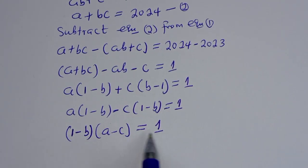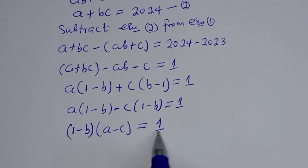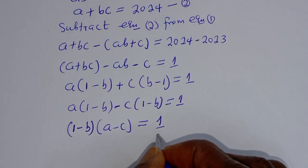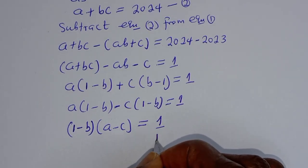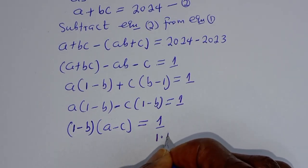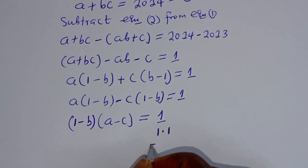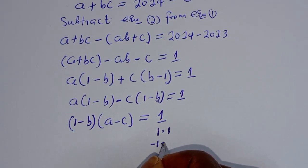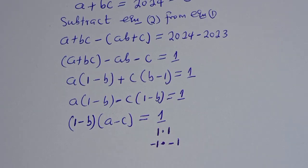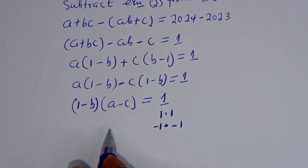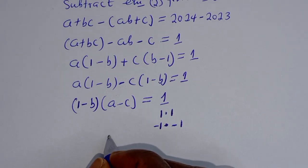We have (1 - b)(a - c) = 1. Since we want integer solutions, we need to find factor pairs of 1. One can be written as 1 × 1 or (-1) × (-1). So there are two cases.